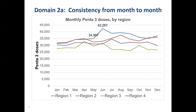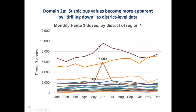However, when we're looking at data at the level of a region, we can't be sure: is this due to a data quality issue, or does it represent an actual increase in services? But look what happens when we actually look at these trend lines for individual districts. Here we see the data from the same country and from region one, but in this case there's one line for each of the districts of region one, and there's a certain amount of instability from month to month in the indicators.